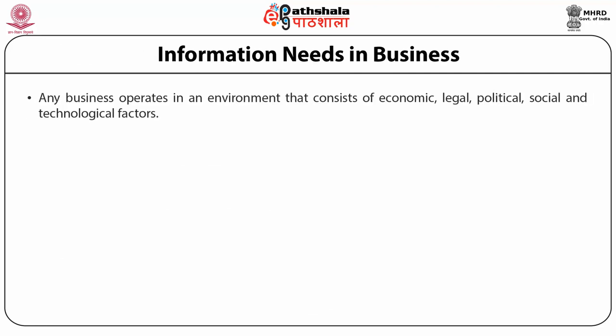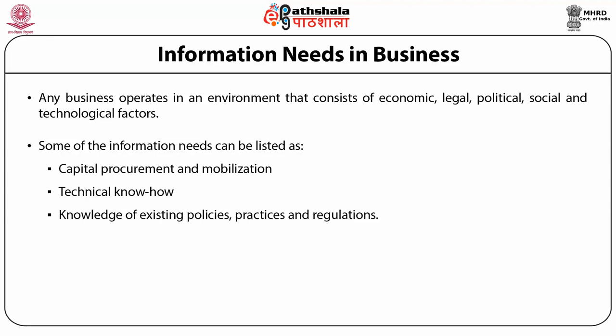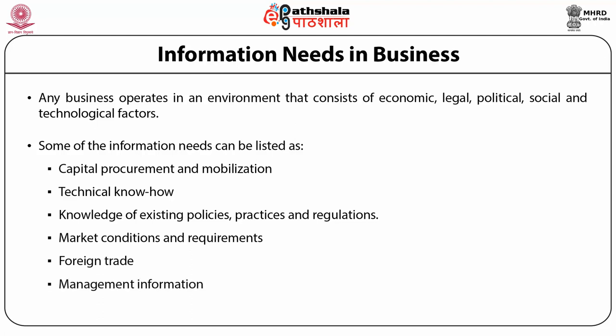The research and development activities involve two activities: first, basic and fundamental research; second, applied research and technical development. The R&D professionals make use of a wide range of information of direct relevance to the topic of research. Researchers require information for the following purposes: to aid in perception or definition of problem, to formulate a scientific or technical solution, to place work in proper context, to relate work to ongoing research in progress, to select a design strategy for data collection, to select a data gathering technique, to design or select equipment or apparatus for conducting a study, to enable full interpretation of collected data, and to integrate findings into the current state of knowledge. The R&D activity is paramount for the socio-economic development of a nation. Information needs in business: any business operates in an environment that consists of economic, legal, political, social, and technological factors. Each factor creates needs for different types of information. Some of the information needs include capital procurement and mobilization, technical know-how, knowledge of existing policies, practices and regulations, market conditions and requirements, foreign trade, and management information. If adequately satisfied with the right information, the business excels.